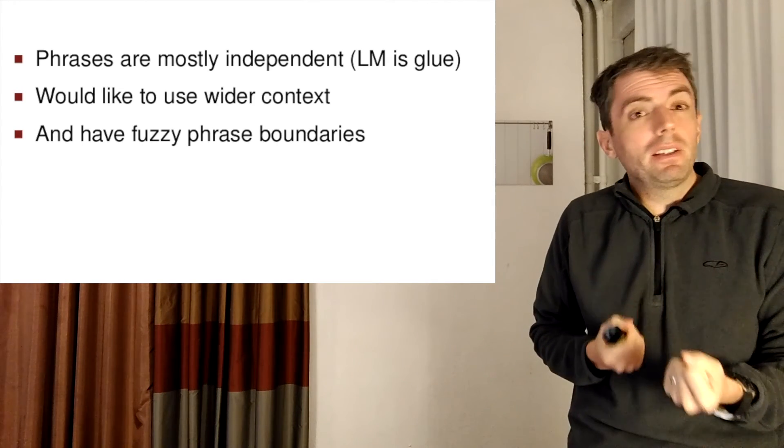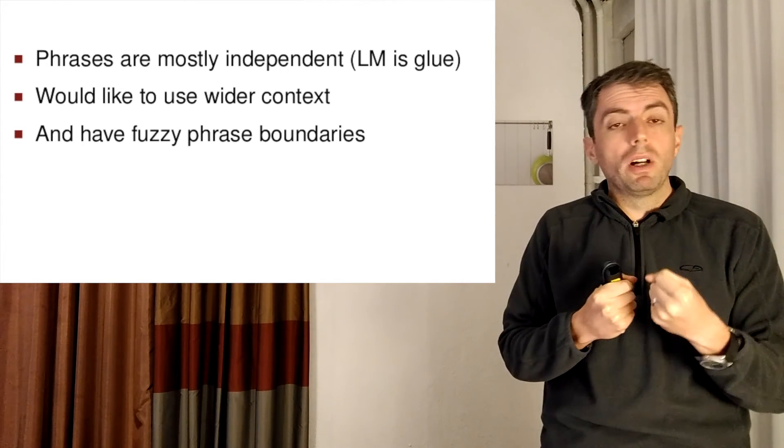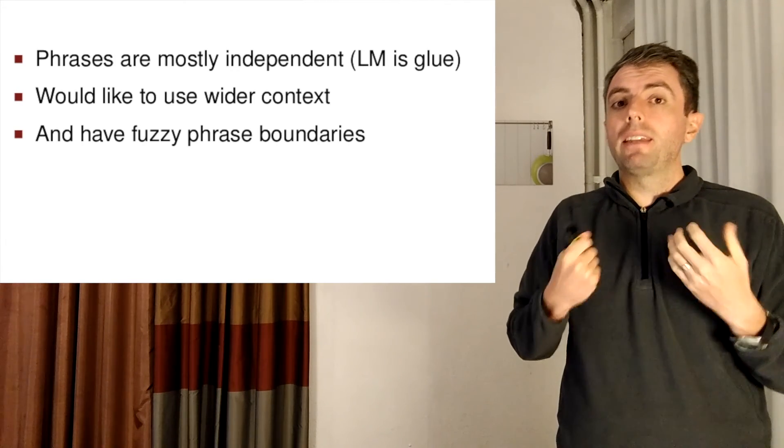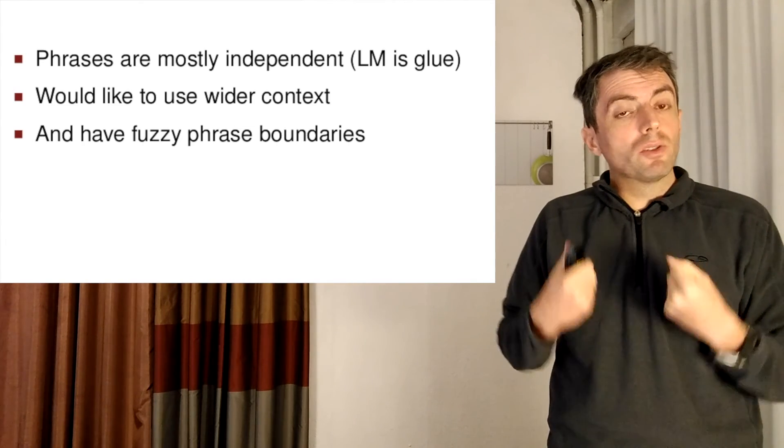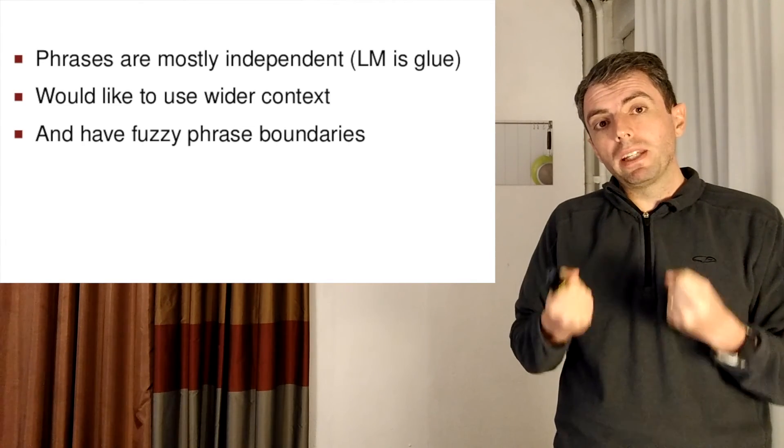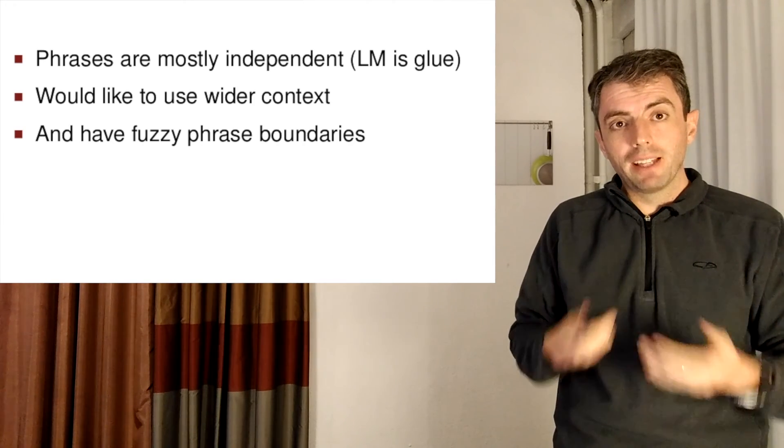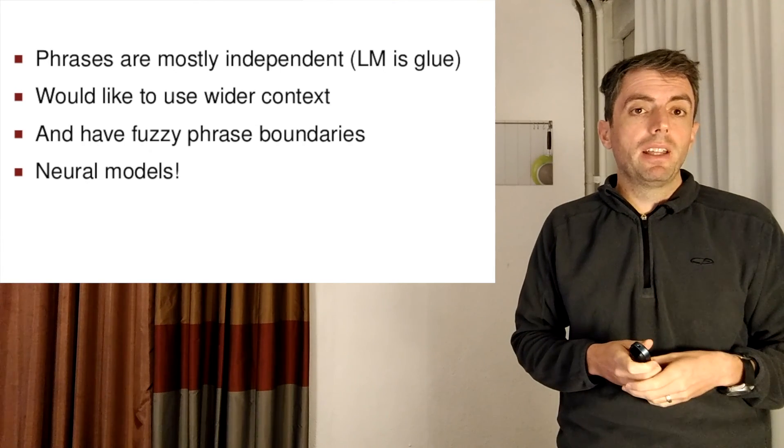And the phrases may have fuzzy boundaries. You might want to blur one phrase into another to get a better translation. And these models don't allow you to do that because each phrase is discrete and independent. So how can we get a better model that ties all of this together? And that's what we're going to be talking about next. Neural translation models that allow you to have these properties.